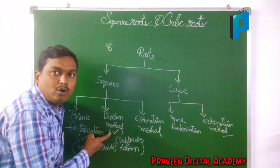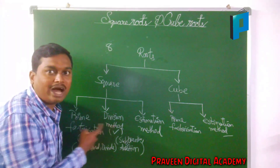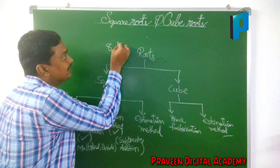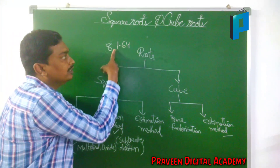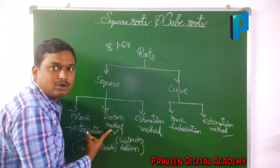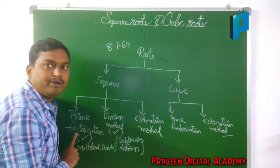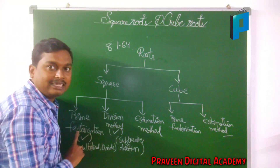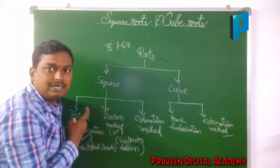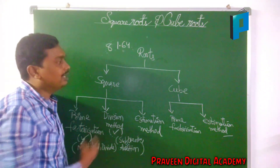One more thing about the division method: we can also find the square roots of decimal numbers using it. For example, a value like 1.64 — this value can be found using the division method only. Decimal number square roots cannot be found using the prime factorization method; they can only be found using the division method. Estimation method gives an approximate answer.